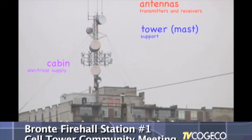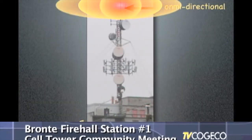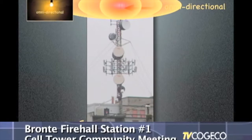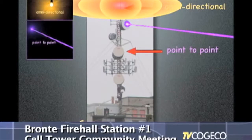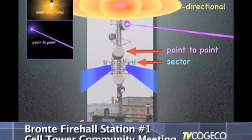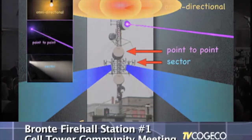These antennas look very different and they have different functions. The ones at the top are omnidirectional, which means they radiate in all directions. You can think of them like an incandescent light bulb that simply gives light in all directions. We have some that are point-to-point antennas — imagine a laser where you beam the signal to another antenna. The third type is called a sector antenna, which radiates in a certain direction, like a flashlight: when you beam it in a direction, the light doesn't go everywhere.